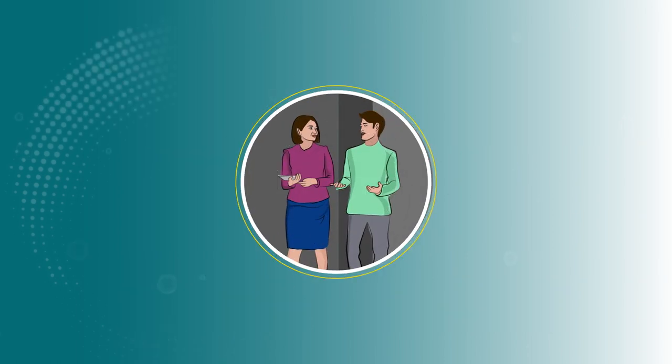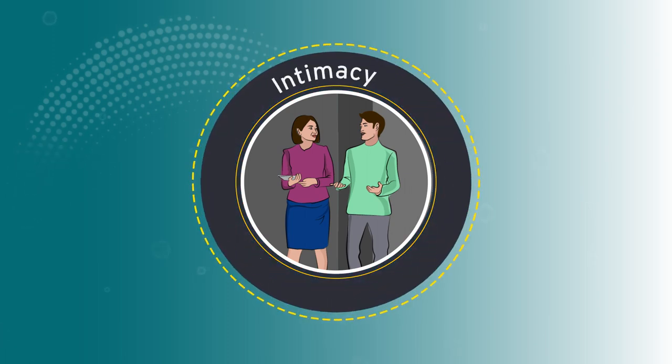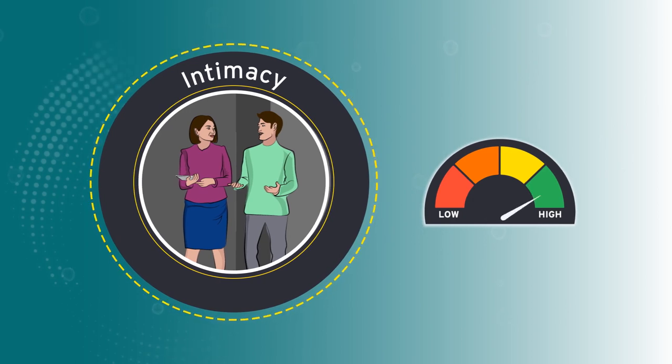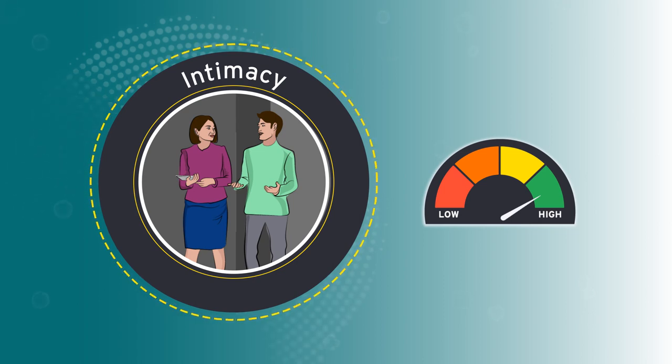The third component of the numerator, which also raises someone's trustworthiness score, is intimacy. Intimacy means feeling emotional security in dealing with us. A high score on intimacy means we feel safe sharing information with that person. There is confidence that the person will handle that information respectfully and appropriately.